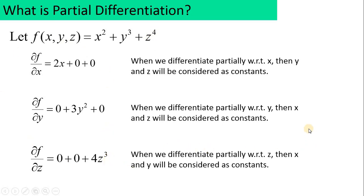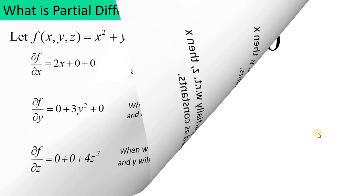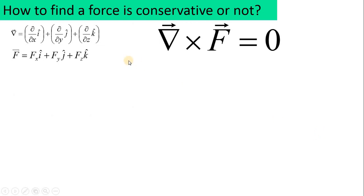Now restating the necessary condition: del cross F must equal zero. Here is the del vector — (∂/∂x)î + (∂/∂y)ĵ + (∂/∂z)k̂ — and the force vector has three components: Fx î, Fy ĵ, and Fz k̂. The cross product between these two vectors must equal zero for the force to be conservative.